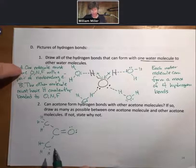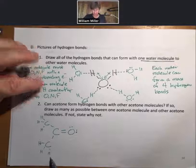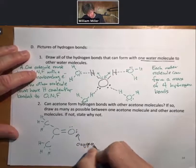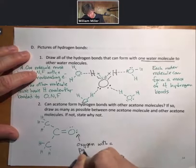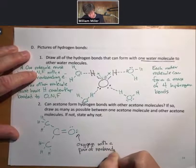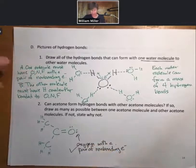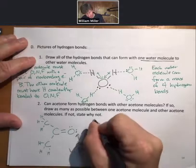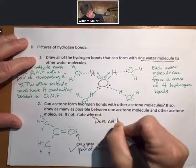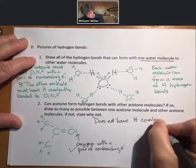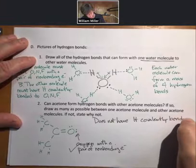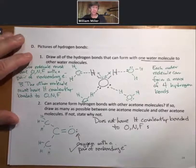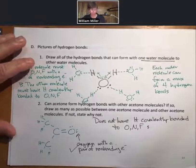So even though acetone has oxygen, nitrogen, fluorine—it has oxygen with a pair of non-bonding electrons. So check, it does not have hydrogen covalently bonded to O, N, or F.